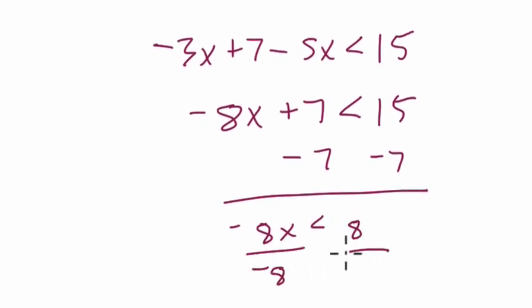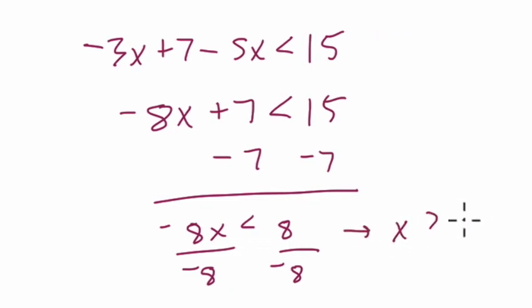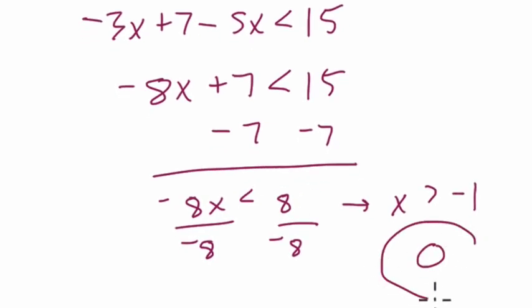Divided by a negative changes the direction of your inequality. So here, x is greater than negative 1. And the first integer that's greater than negative 1 is the number 0.